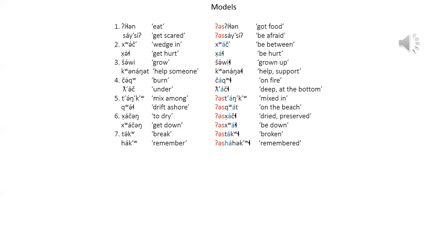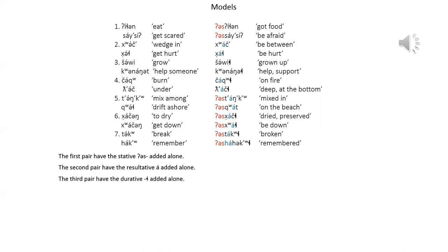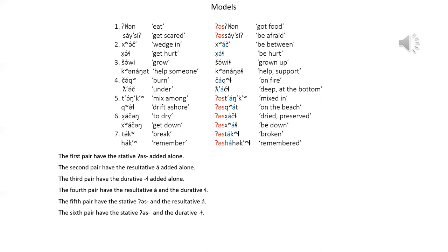The second pair has the stative prefix. The second pair has the resultative infix. The third pair has the durative barred-L suffix. The fourth pair has the resultative infix and the durative barred-L suffix. The fifth pair has the stative prefix and the resultative infix. The sixth pair has the stative prefix and the durative barred-L suffix, and the final pair has all three. As you can see, the prefix is in red, the infix is in blue, and the suffix is bold.